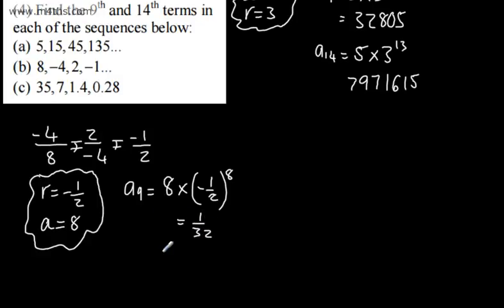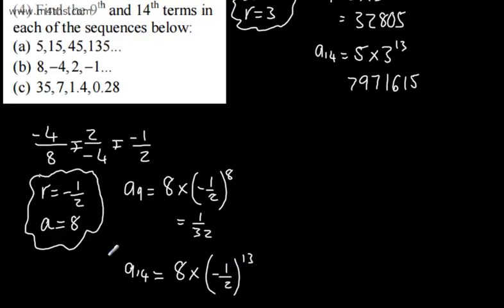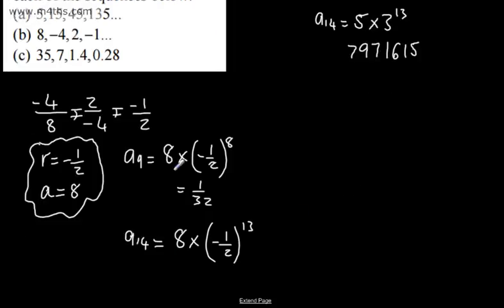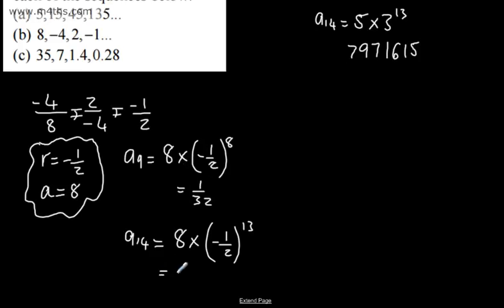If we now look at the 14th term, A14 or A sub 14 as it's subscript, we're going to have 8 times by negative 1 half to the power of 13. All I'm going to do is come through and change that over — that's going to be negative 1 over 1024. So they are powers of 2. If you spot them, let's put that in — negative 1 over 1024.